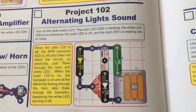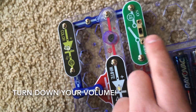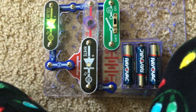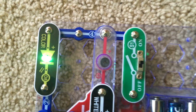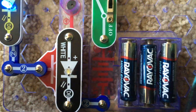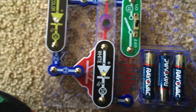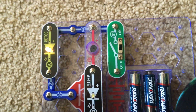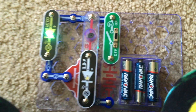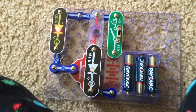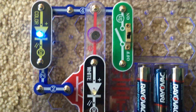Alternating lights and sounds. We're going to turn on the slide switch — turn down your volume. The horn is loud and the color LED comes on but the white LED remains off. That's because although both the horn and white LED are on the right branch of the MPN transistor which receives more current, all the electricity is flowing through the horn and bypassing the white LED.